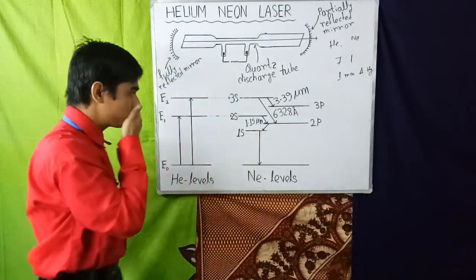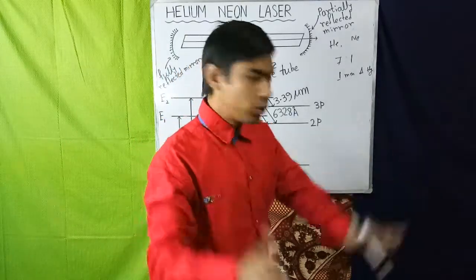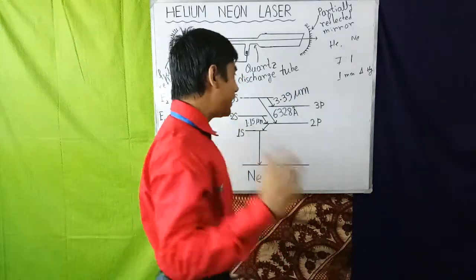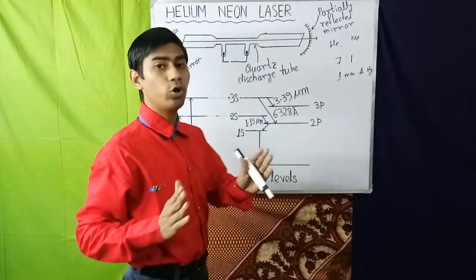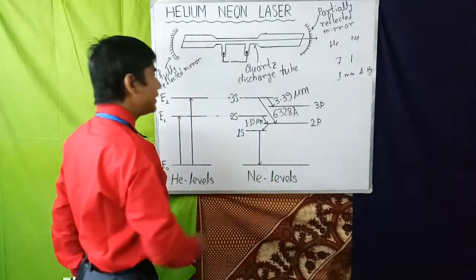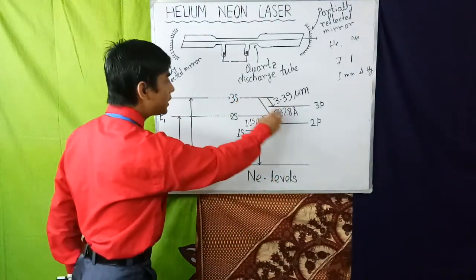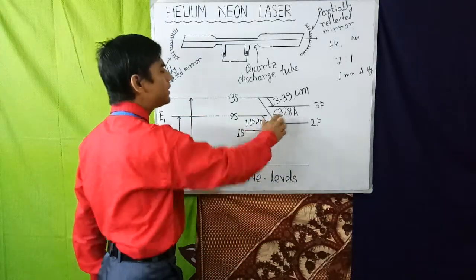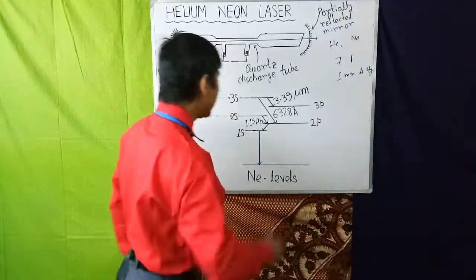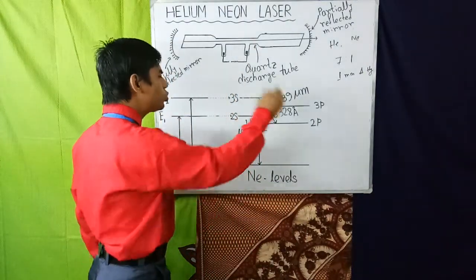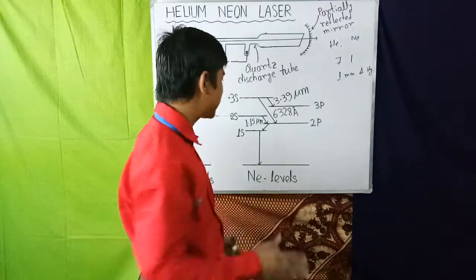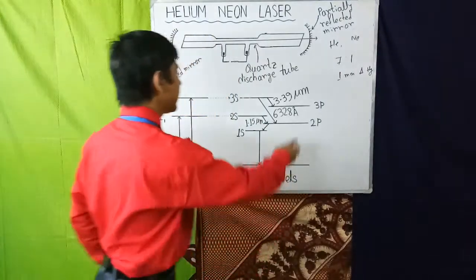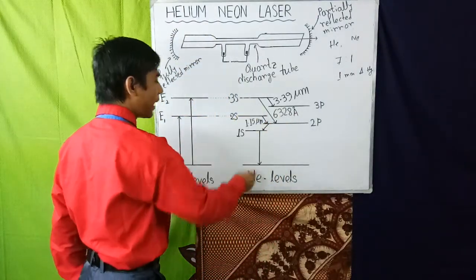Now when atom in the 3S level jumps to the 3P level, the radiation of wavelength 3.39 micrometer will be emitted. Similarly, the transition from 3S level to 2P level generates radiation of wavelength 6328 angstrom. And when atom in the 2S level jumps to the 2P level, the radiation of wavelength 1.15 micrometer will be emitted. Then they come to the 1S state and at last they come to the ground state by the collision with the walls of discharge tube.